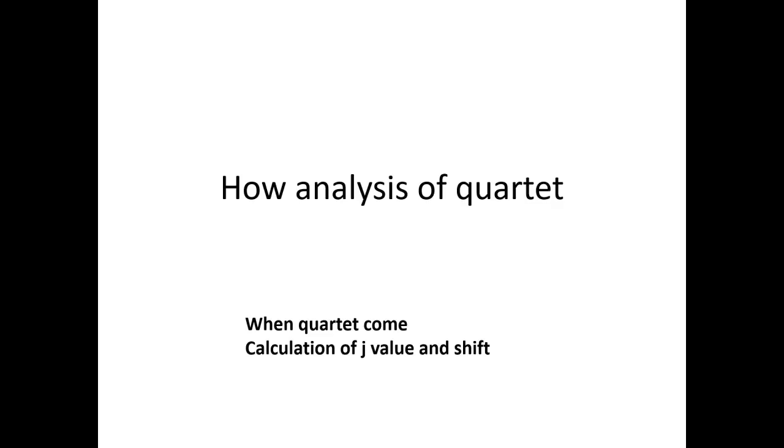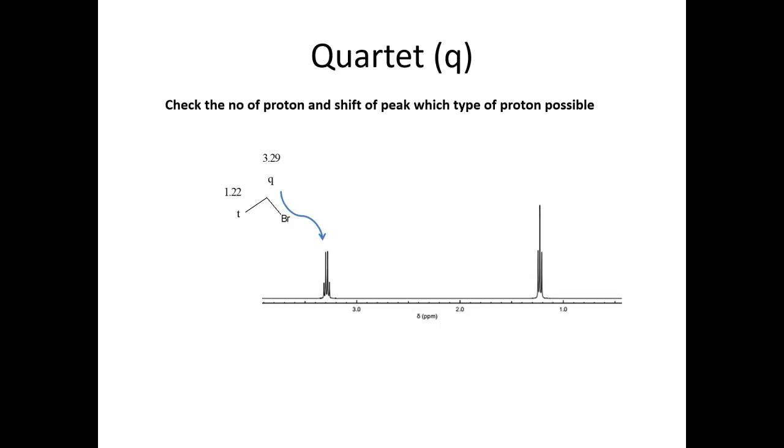Hi, today we are discussing the quartet signal in NMR, how to calculate the J value and chemical shift of the quartet. This is an example of a molecule which gives you triplet and quartet. Before interpreting the spectra, check the number of protons and shift of the peak which you are looking for interpretation.